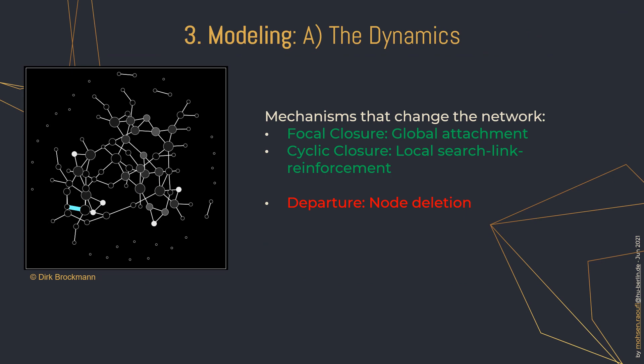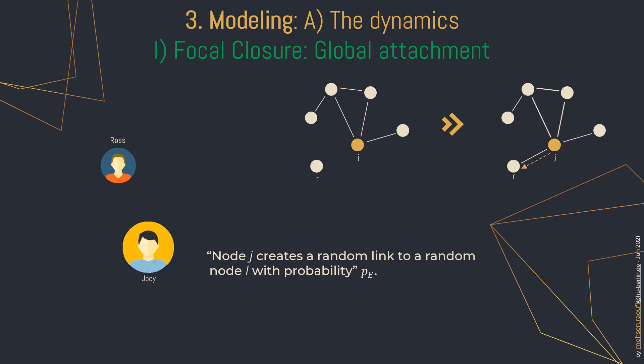There are three simple mechanisms governing the dynamic of the network. I color-coded them into two types: those that enhance the connectivity of the network, and the one that reduces it. I will get into the details in the next slides.